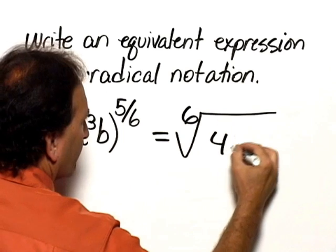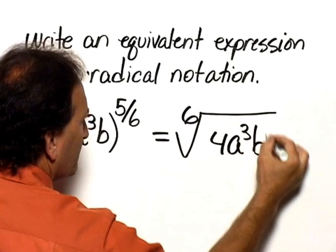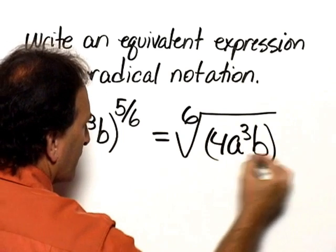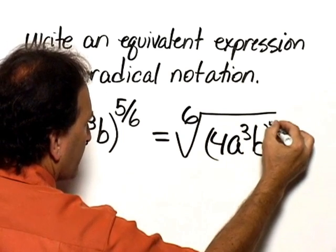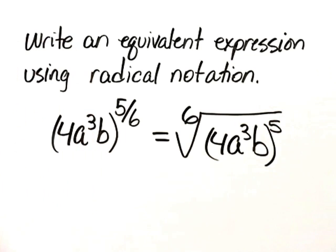So we have 4a cubed b raised to the fifth, and our result is the sixth root of 4a cubed b raised to the power 5.